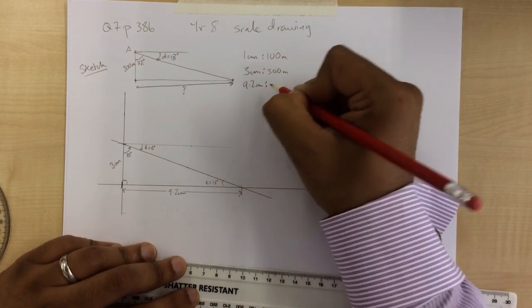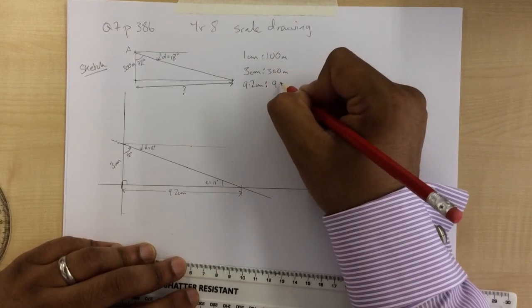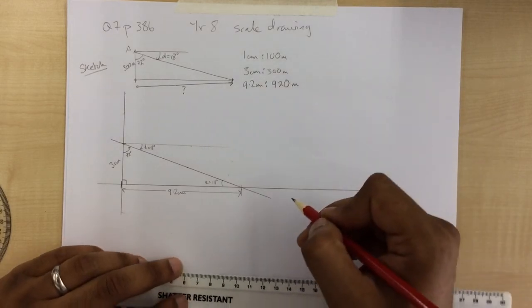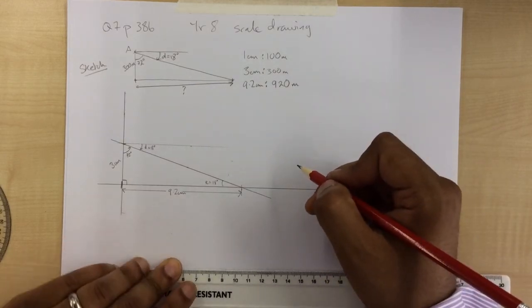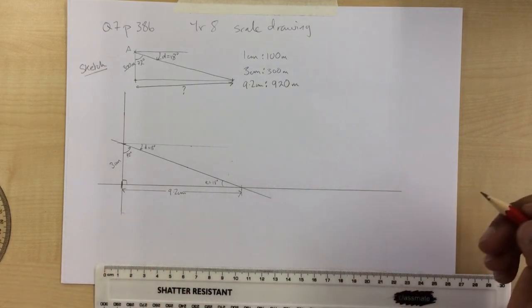for my scale, that's actually an easy scale to use, because that must mean it's 920 meters. And that is the answer to the question. Has it asked for anything else? No. Thank you very much. Bye.